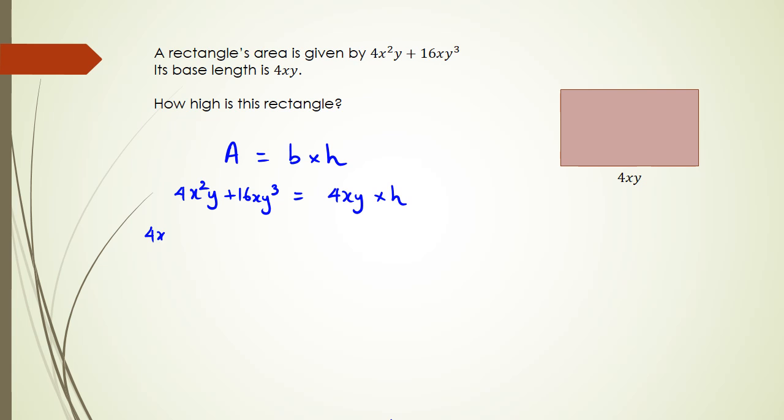If I take 4xy as a common factor, I've got to look at what do I multiply by 4xy to get 4x²y, so that's going to be x plus, 4 times 4 is 16, x times 1 is x so I'm not going to add anything, y times y² would equal 16xy³. So this is what this looks like, which means I can kind of see that the height equals to this, so I can actually say height is equal to x + 4y².